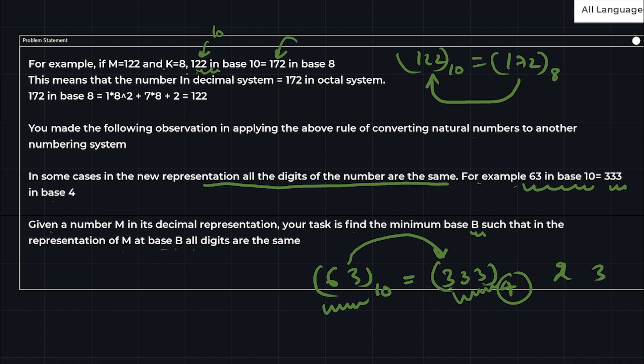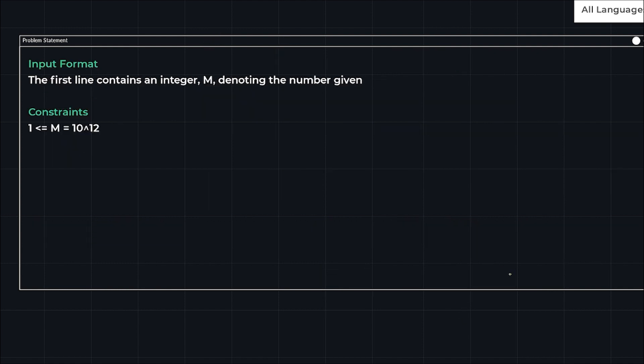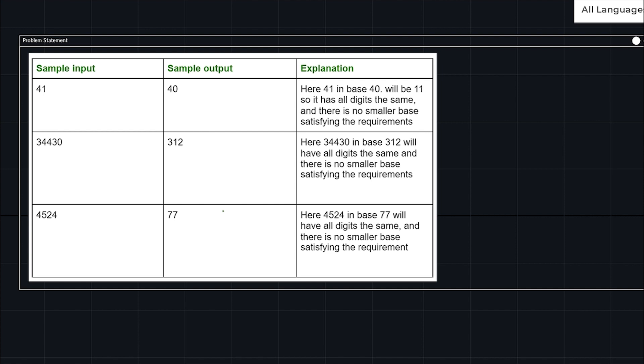The input format will be we are given M which denotes the number given. M is less than or equal to 10 raised to power 12. These are the sample inputs and outputs. If we give M equals 41, we will get the output as 40.